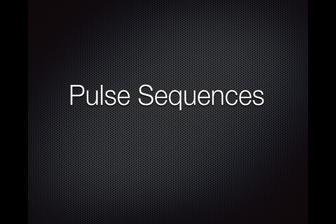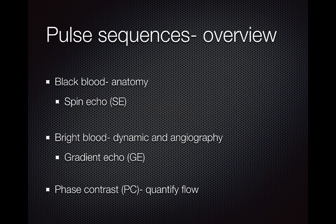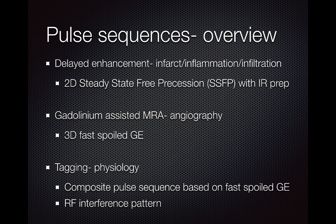In this presentation, I will cover basics of cardiac MRI pulse sequences. The pulse sequences we're going to discuss include black blood images used for anatomy, bright blood images used for dynamic imaging and angiography, phase contrast images used to quantify flow, delayed enhancement to look for infarct, inflammation, or infiltrative diseases, gadolinium-assisted MRAs for vessel angiography, and tagging images utilized for physiologic evaluation.